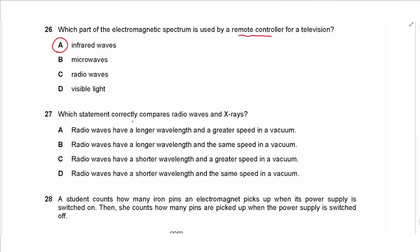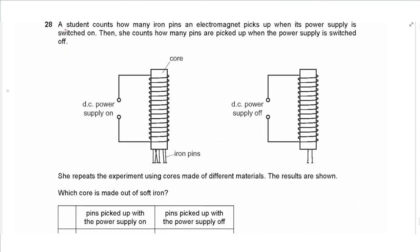Question 27: comparing radio waves and X-rays. Radio waves have a longer wavelength than X-rays — that is correct. All electromagnetic waves travel at the same speed in vacuum, so radio waves do not have a greater speed. The answer is B.